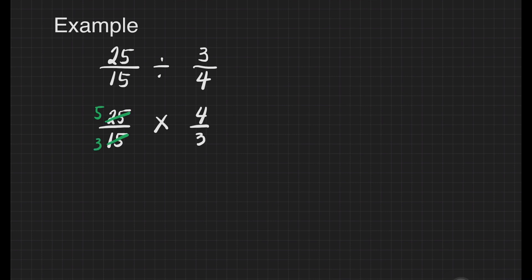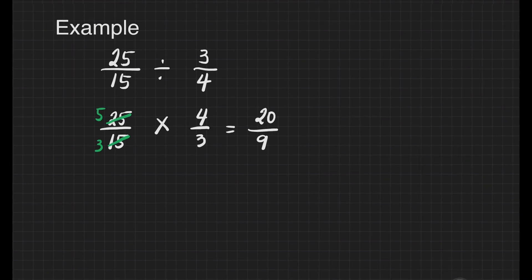Are there numbers that we can still cancel? I think there's none. Then let's proceed to multiplication. Five times four is equal to twenty. Three times three is equal to nine. Next, let's change this 20/9 to mixed number because it is an improper fraction. Let's divide. Twenty divided by nine.